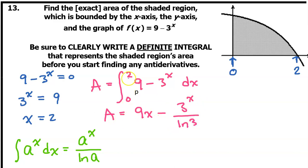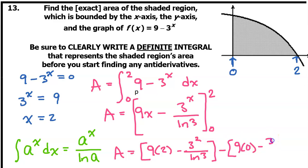Let's go ahead and apply the limits of integration. I'm going to put some brackets on this from 0 to 2. This definite integral will be found by taking the value at 2 and subtracting the value at 0. So this area will equal 9 times 2 minus 3 to the 2 over natural log 3, minus the value at 0, which is 9 times 0 minus 3 to the 0 over natural log 3.